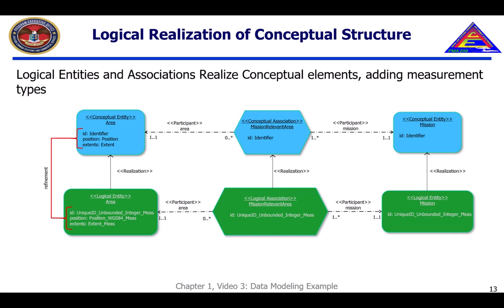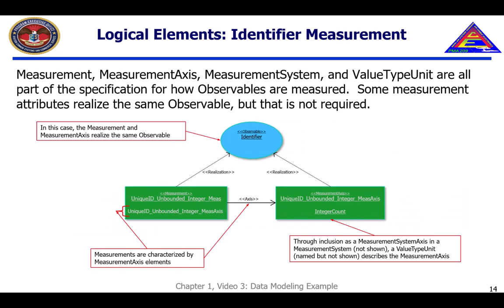The FACE data architecture uses the realization relationship as a semantic attribute that indicates the refinement relationship between logical elements and conceptual elements. This diagram shows the realization relationship between the logical entities and association and the corresponding conceptual entities and association. The logical level refines conceptual observables by adding more specific details such as units, data types, and a frame of reference, captured in the measurement, measurement axis, measurement system, and value type unit elements.